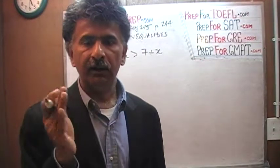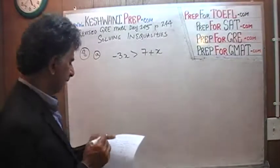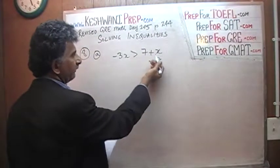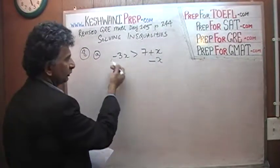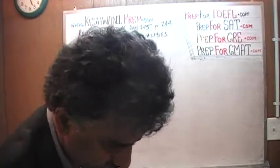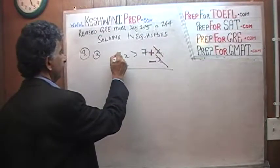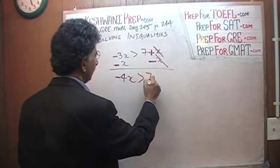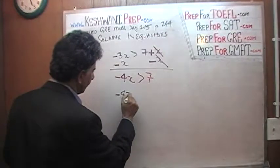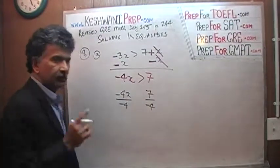The same rules apply for the solution of an inequality, except one situation which we will come to in a second. So we can subtract x from both sides — had it been an equation, that's exactly what we would have done. On the right hand side, we end up with a positive x and a negative x — they cancel each other out. And here we have negative 3x and negative x, which gives us negative 4x, which is greater than 7. Now we are going to take negative 4x and 7 and divide by negative 4.